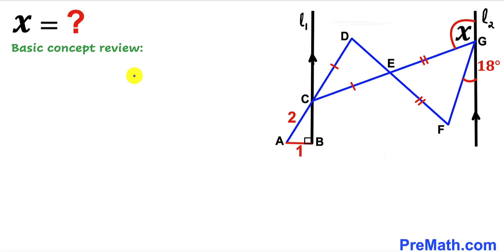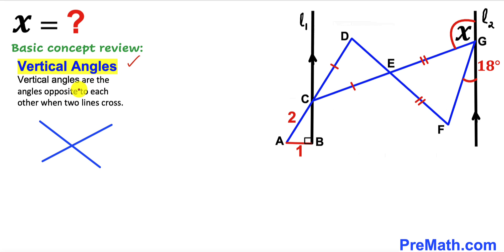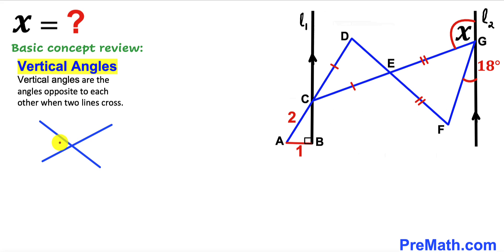Let's get started. Before we proceed, let me go over the basic concepts. Vertical angles are the angles opposite to each other when two lines cross. As you can see in this diagram, when two lines cross, the opposite angles are vertical angles and they are congruent.